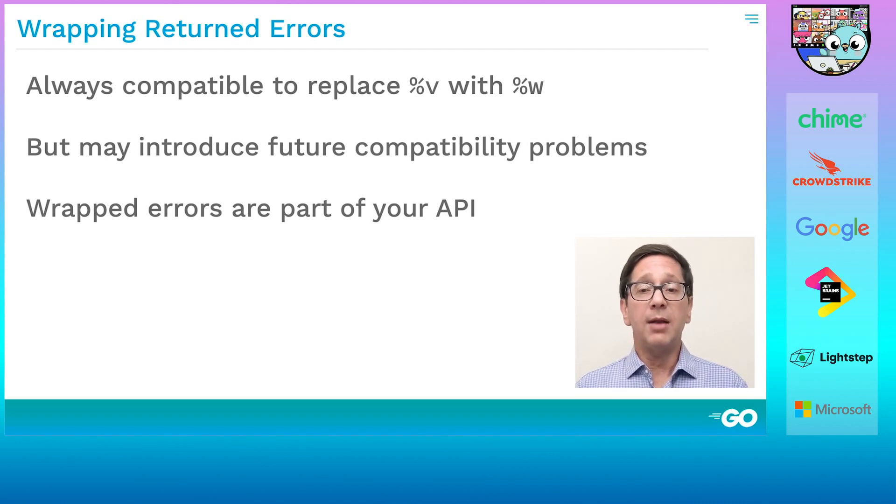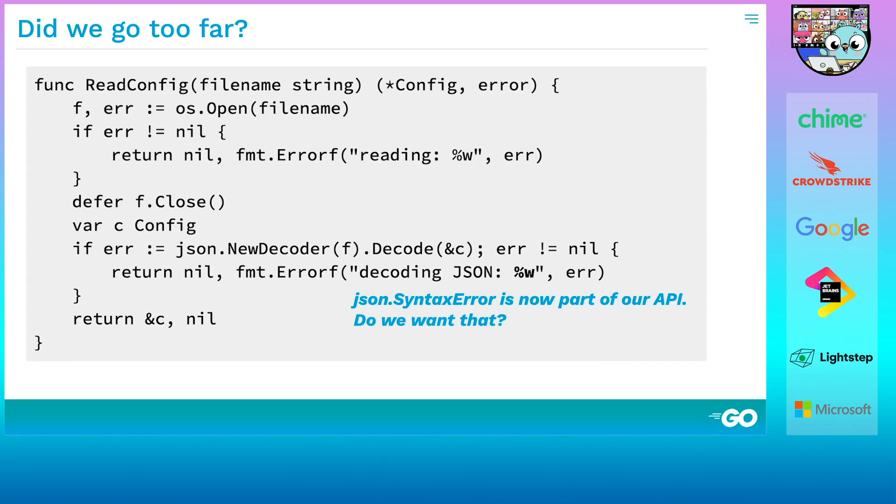But wrapping an error now can introduce compatibility problems in the future when you want to change your implementation. If you wrap an error, it is now part of your API because programs can depend on it. To see how that can be a problem in practice, let's return to our opening example. We changed our readconfig function to wrap the error we got from JSON decoding. That means that any error types and values returned by the encoding slash JSON package are now visible to our callers. What if later we wanted to switch to a different JSON package or to change formats entirely? Clients might depend on the particular wrapped errors we return and a change could break them. How is that different from the case where a client looks for a string inside the error message? The difference is that we all understand that the text of error messages is for people and people only. It is emphatically not part of the API like values and types are.